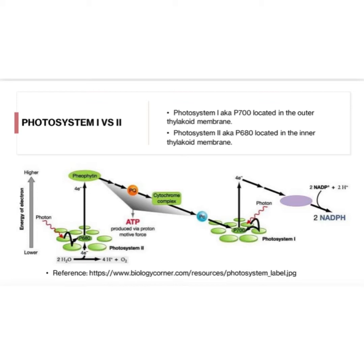In cyclic photophosphorylation, specifically in P700, the electrons are recycled — they go back down to the reaction center after being passed through the electron transport chain. In non-cyclic photophosphorylation, the electrons move in a non-cyclic fashion and are not recycled; they are actually reduced. As shown, non-cyclic photophosphorylation uses two photosystems: photosystem 1 and photosystem 2.